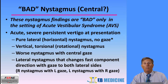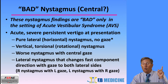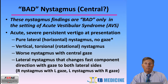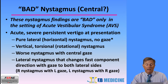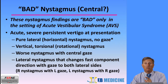In acute vestibular syndrome, nystagmus findings that suggest a central etiology such as posterior stroke include: pure lateral horizontal nystagmus without gaze stimulation, vertical nystagmus, rotational or torsional nystagmus, worsening nystagmus with central gaze, and lateral nystagmus that changes its fast component direction with gaze to each side — gaze to the left with quick nystagmus right, gaze to the right with quick nystagmus left.